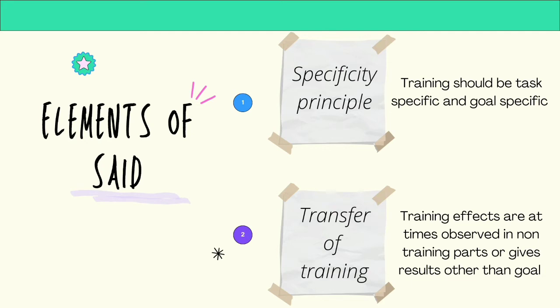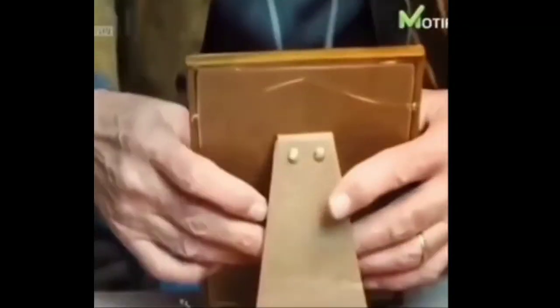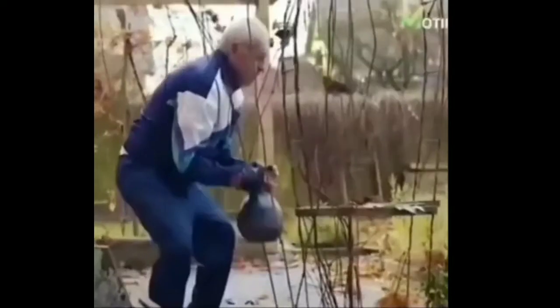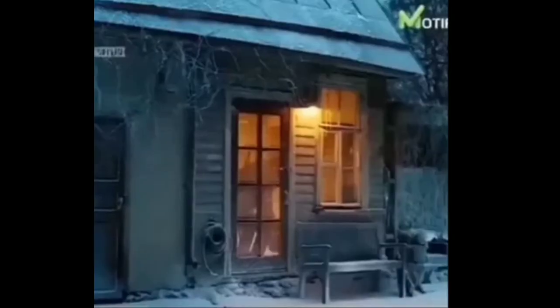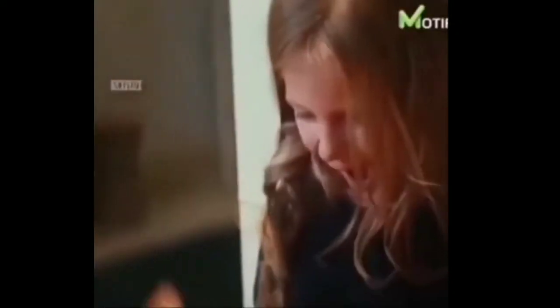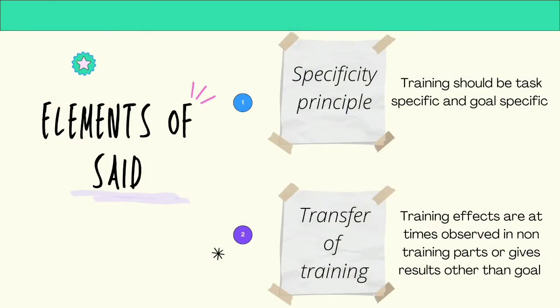An element of the SAID principle is the specificity principle, which states that training should be task-specific and goal-specific. This is depicted in a popular advertisement very beautifully, where a grandfather performs specific exercises so that he can achieve his ultimate goal — lifting up his granddaughter so she can put the star on the Christmas tree.